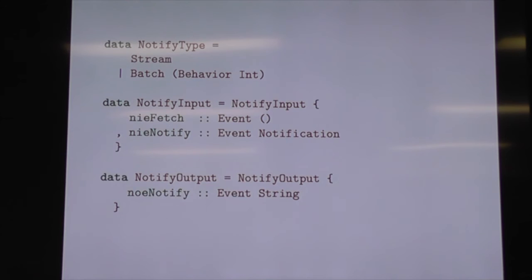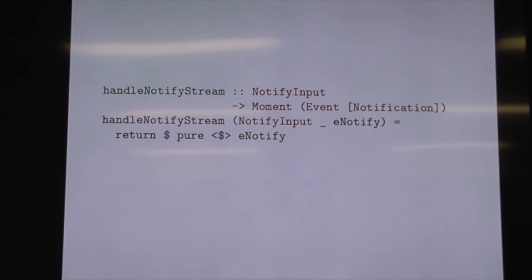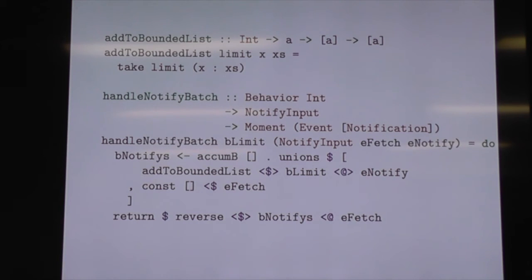For notification handling, we have two types: the streaming one or the batching one with a limit so we don't run out of memory. We take in an input notification and whether someone is exclusively fetching the history, and we output a string. With the streaming version, we just wrap it in a list and send it out. With the batching version, it's basically the message history example with a couple of differences: when you fetch, it clears the list in the next event, which means we can use fetch to sample the history before it gets cleared. So if you have ten messages in the queue and you fetch, it'll grab those, print them out, and then clear the history.